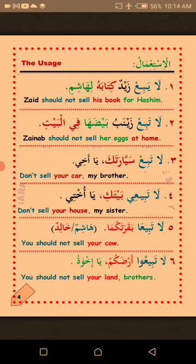Fi-l-bayt is an agent of kasra — it must give kasra to the last letter of any word appearing after it in Arabic, so we say fi-l-bayti with kasra, not fatha or dhamma. Thalatha, number three: La-tabi' zayta zaytak ya akhi — don't sell your oil, my brother. Arba, number four: La-tabī'ī baytaki ya ukhti — don't sell your house, my sister. Khamsa, number five: La-tabī'ā baqaratakuma — don't sell your cow, talking to two persons.